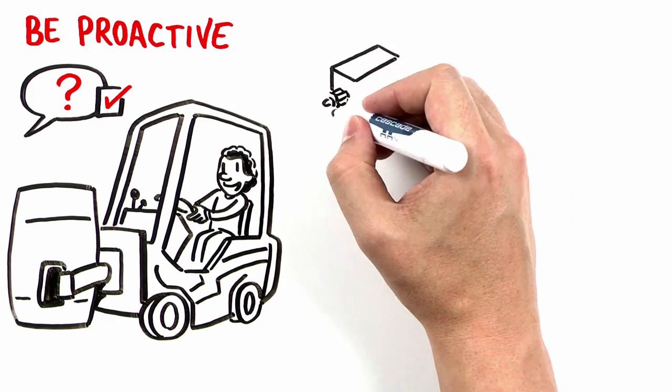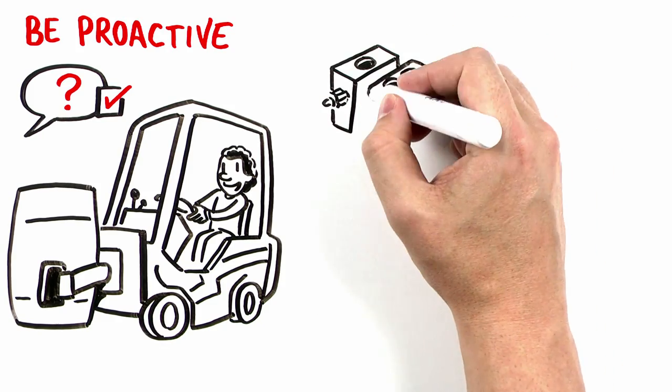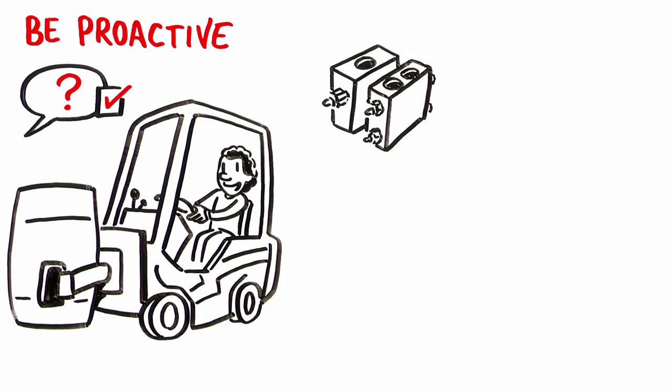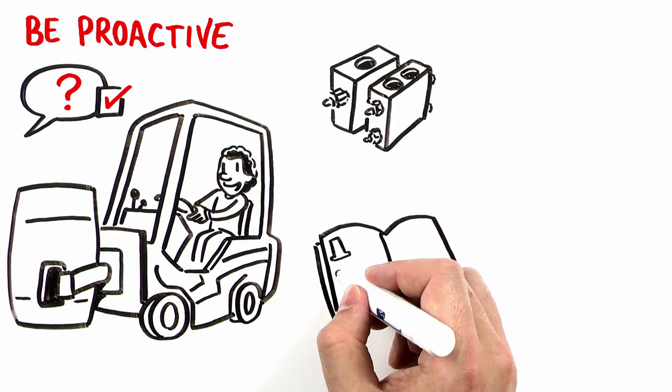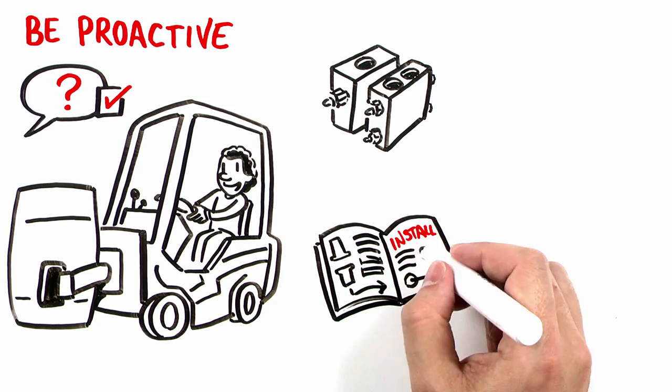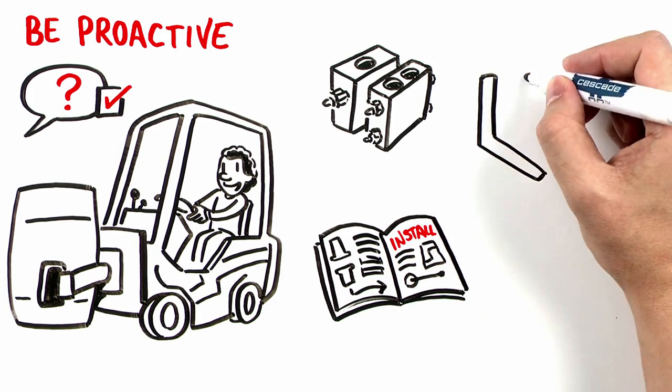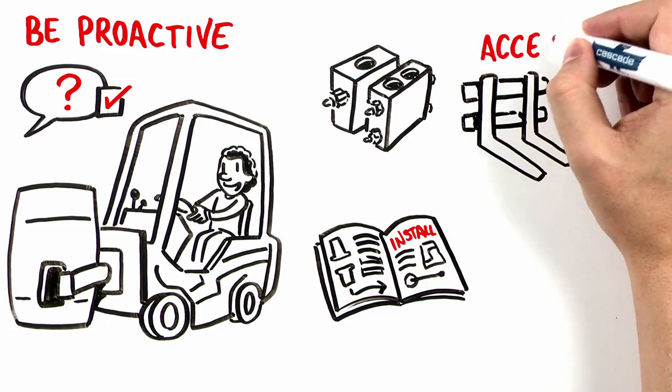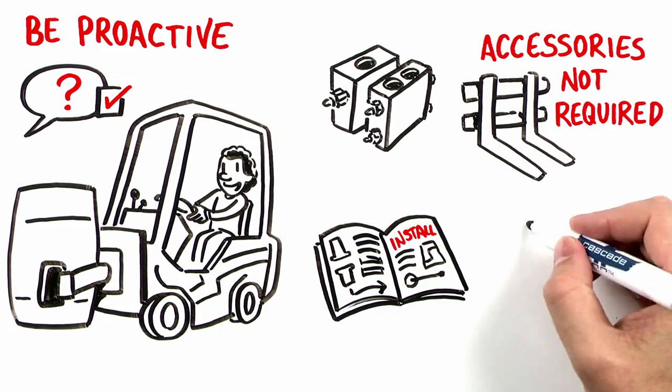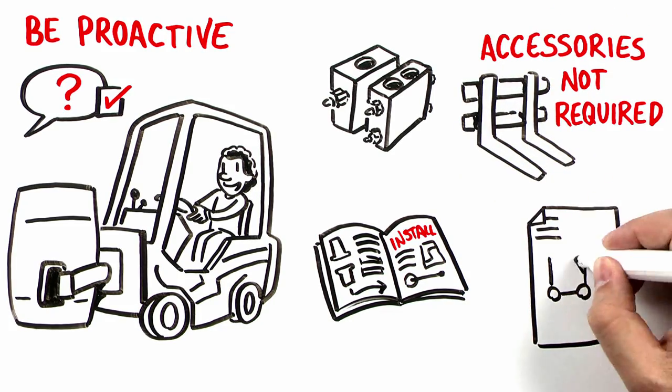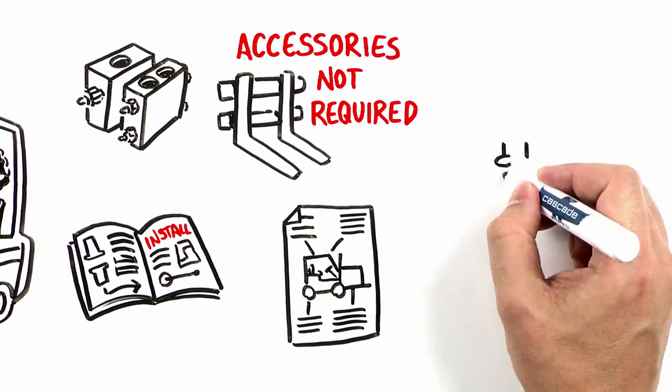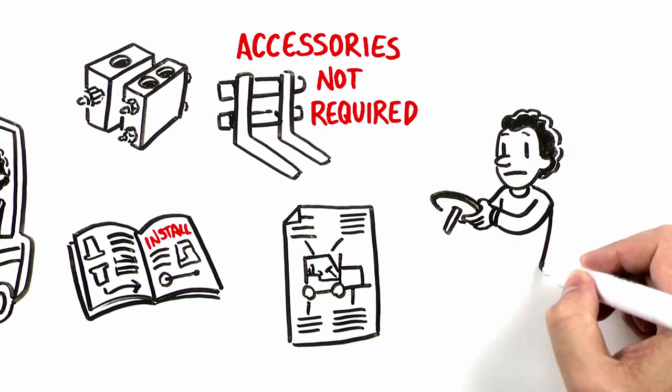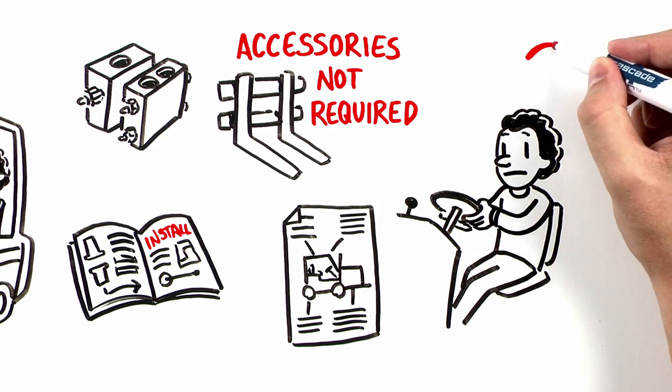Are there hydraulic accessories I should consider when installing a particular attachment? How do I determine whether or not I should install these accessories? Are there certain attachments that don't typically require these accessories? Is the forklift designed to eliminate the need for these accessories? Are there certain customer applications that may not benefit from these accessories?